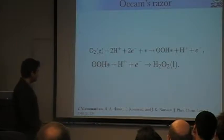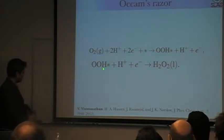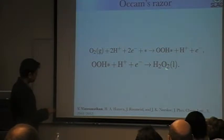What's the simplest thing I could do? Well, you can take oxygen, two protons, two electrons, you add that as OOH, and then instead of breaking the oxygen-oxygen bond, you add another proton electron and you form hydrogen peroxide.